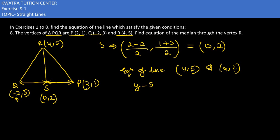X1 is 4, Y1 is 5, X2 is 0, Y2 is 2. So let's take the first: Y minus Y1, that's 5, is equal to Y2 minus Y1, that's 2 minus 5 which is -3, divided by 0 minus 4 which would be -4, times X minus X1. X1 in this case is 4 for you.